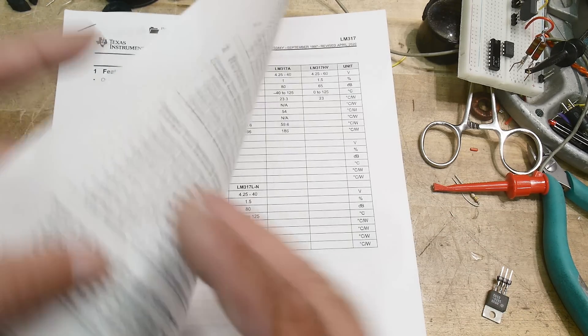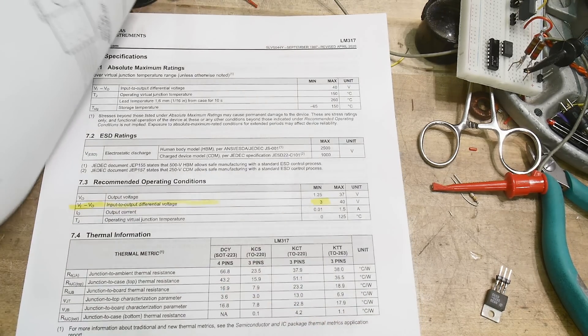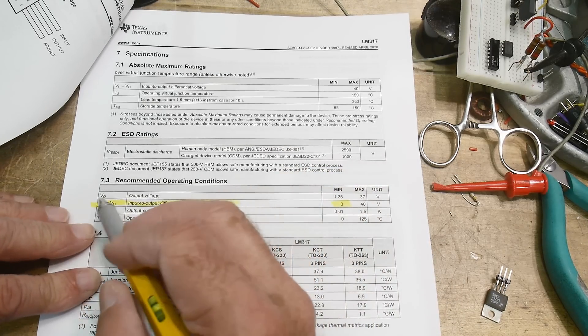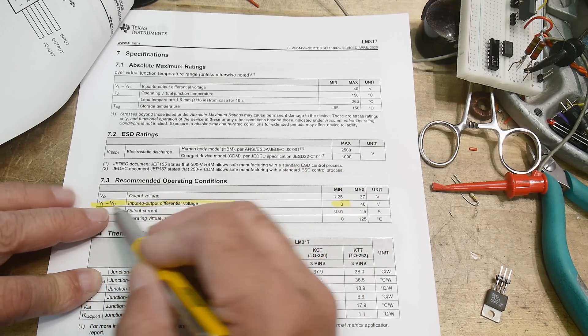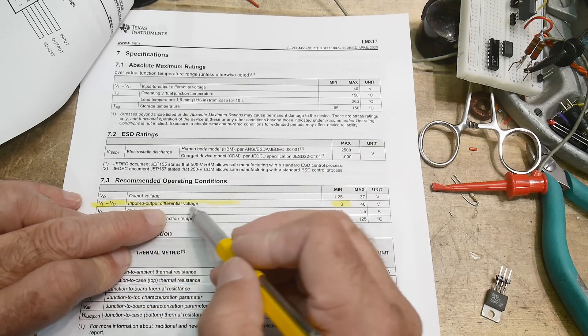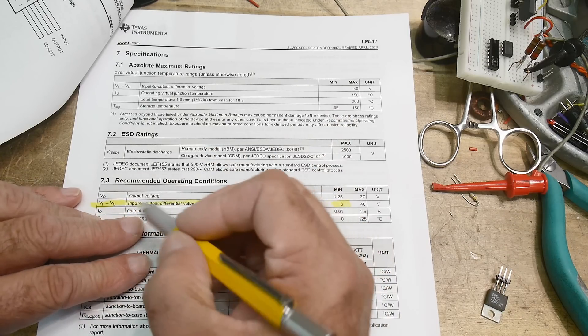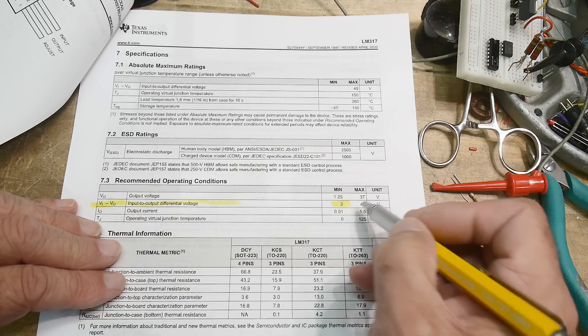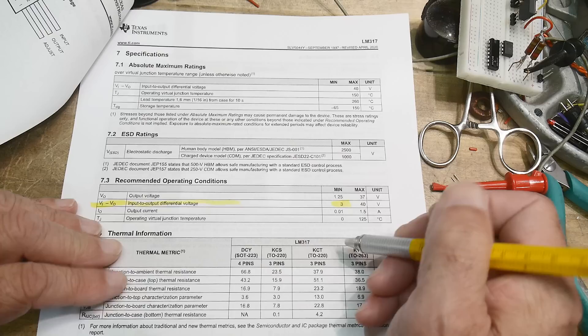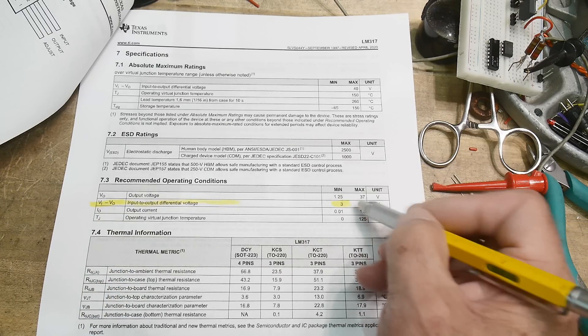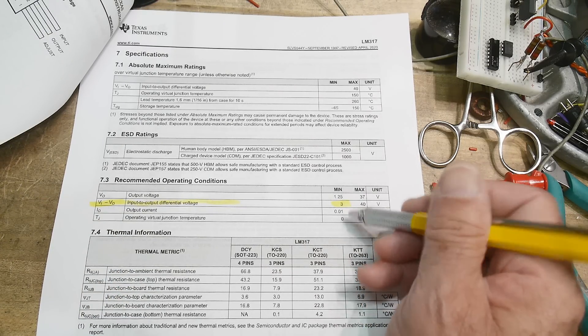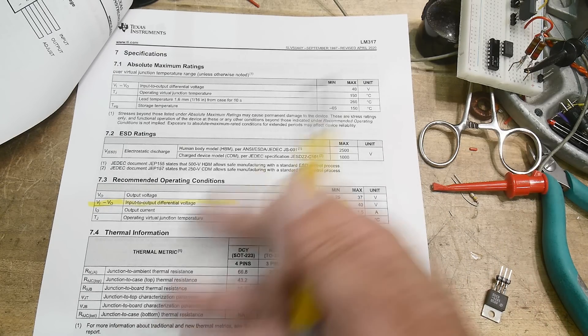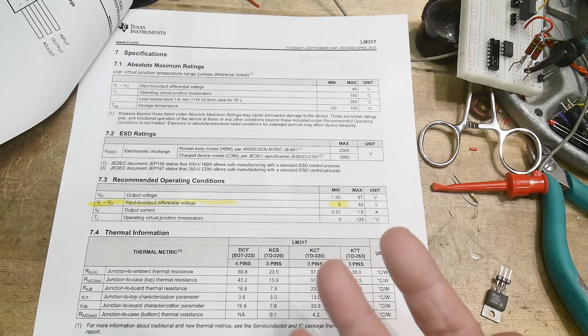It's not always easy to find in the datasheet, but here it is on this one. It says V in minus V out, the input to output differential voltage. So this doesn't say dropout. It says input to output differential voltage. It says that minimum is three volts guaranteed, maximum is 40 volts. So you can drop 40 volts on the regulator, but you need at least three volts of headroom for it to operate on all the other parameters that the data sheet has to offer.